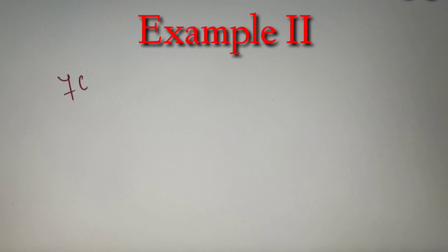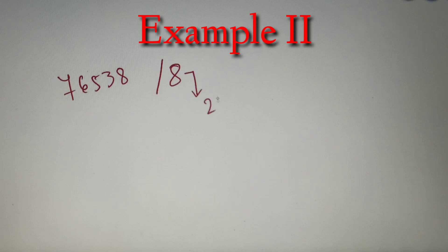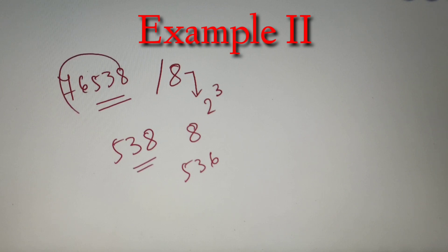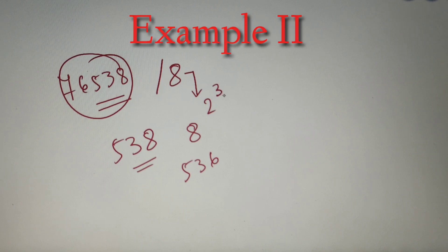Moving on to the second question, we have to check whether the number 76538 is divisible by 8 or not. Now 8 is equal to 2 raised to power 3, so we have to check the last three digits of the number. The last three digits are 538. We check whether 538 is a multiple of 8. We know that 536 is divisible by 8, so we can clearly say that 538 is not a multiple of 8. Therefore, the complete number 76538 is not divisible by 8.